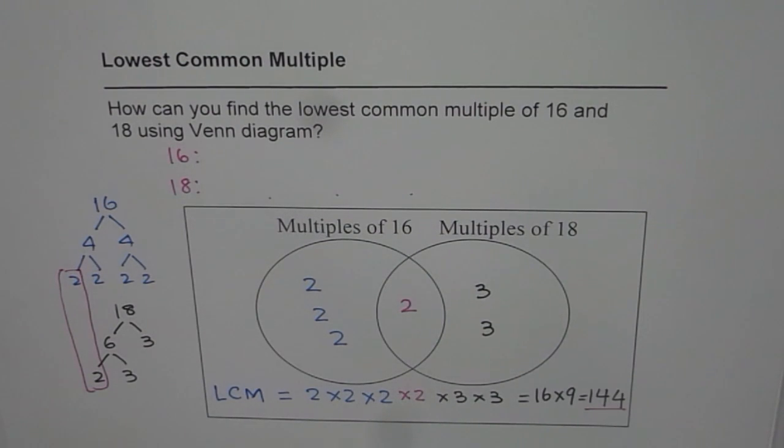How to use a Venn diagram to find the lowest common multiple of any two numbers. You could do three also. Thank you.